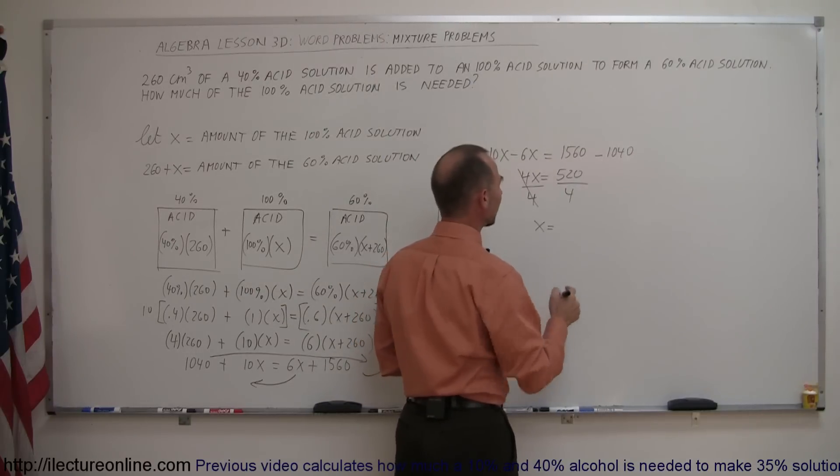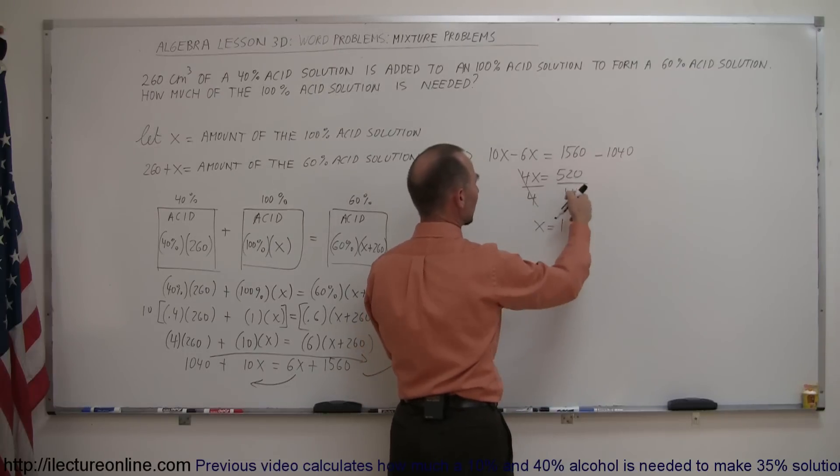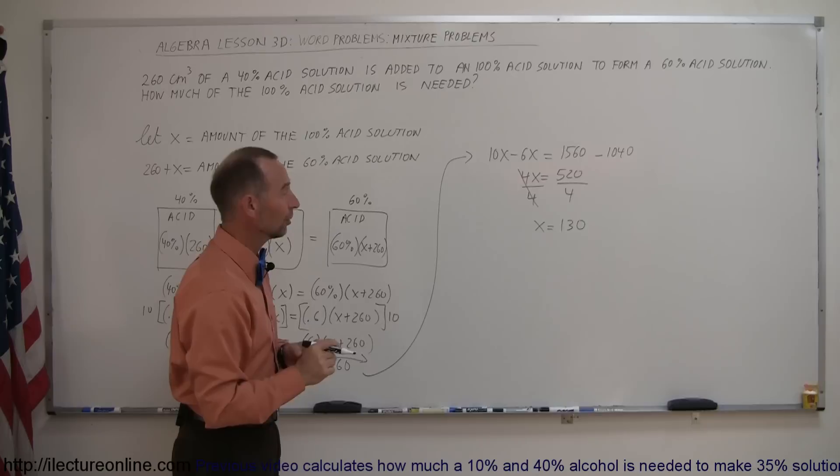4 goes into 520 how many times? So 4 goes into 5, one time, that leaves 1, bring down the 2, that's 3, bring down the 0, that's 130. 4 goes into 520, 130 times.